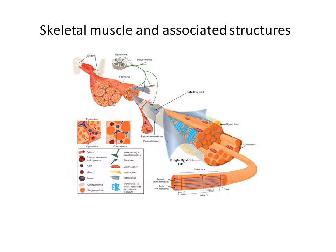This cartoon shows what skeletal muscle is. Skeletal muscle goes from tendon to tendon and it's used for movement. Muscle is innervated and has a vascular supply. The muscle itself consists of bundles of very long single cells called muscle fibres, and each muscle fibre contains the contractile elements of skeletal muscle. So this is a very complex three-dimensional structure.